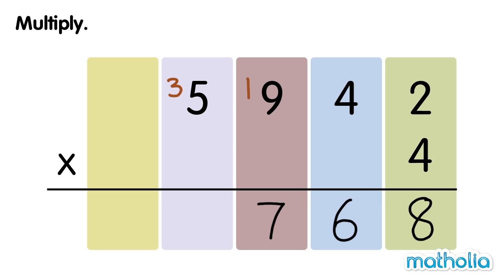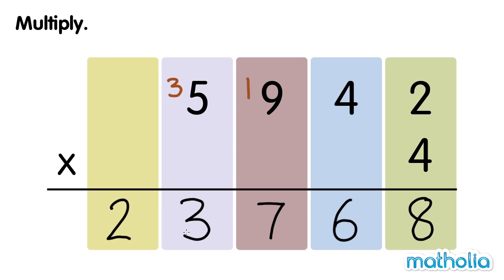Finally, multiply the 1000s. 4 times 5,000 equals 20,000. 20,000 plus 3,000 equals 23,000. 5,942 times 4 equals 23,768.